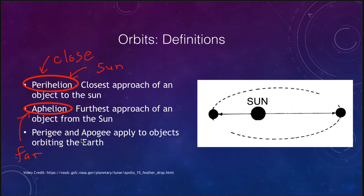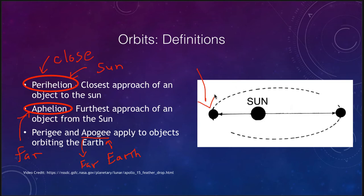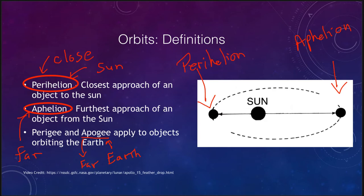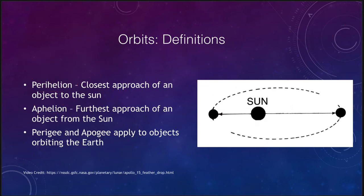If we look at the same terms for the Earth, it would be apogee — 'ap' still meaning far away and 'g' for Earth — so when the Moon is at apogee it is far from the Earth, and when it is at perigee it is close to the Earth. In our picture, perihelion is on the side where the object is closest to the Sun, and aphelion is on the side where it is furthest from the Sun.